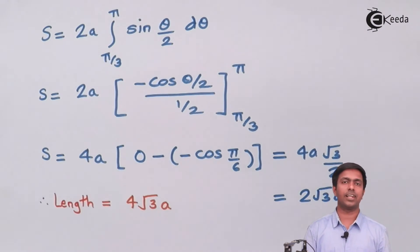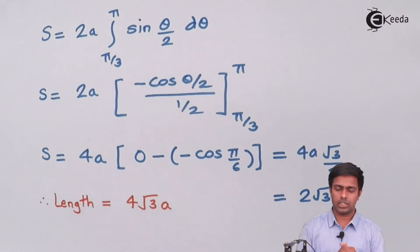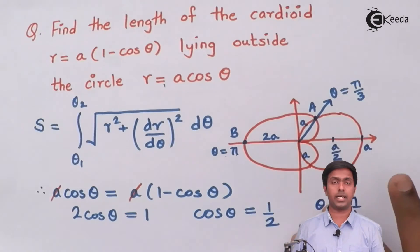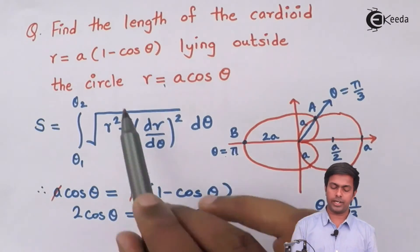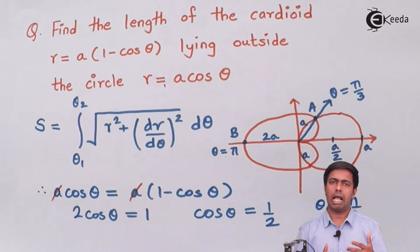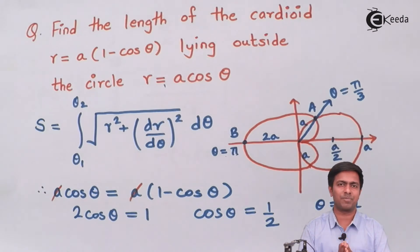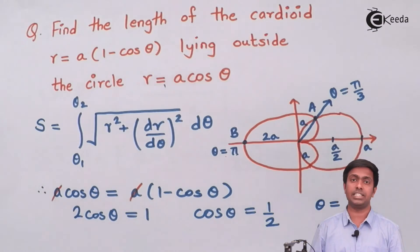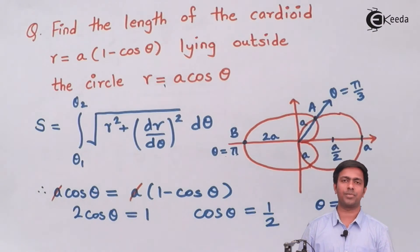So 4√3 A is the final answer. I'm sure you understood how I got the answer. You just have to apply the same process in the examination. The only difference will be that sometimes they might change the equation of the cardioid or the circle — you just have to draw the curves and then follow the same procedure. Don't forget to subscribe to the Ikeda channel for knowledge about all engineering subjects under one roof. Thank you very much.